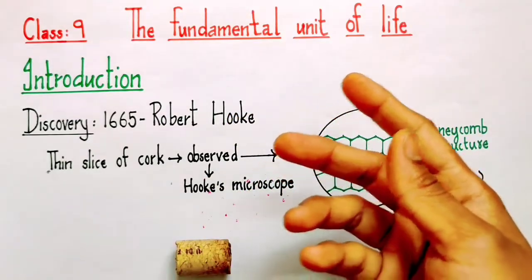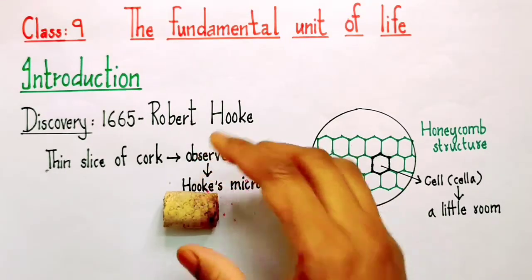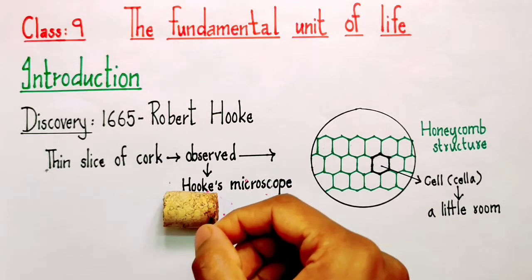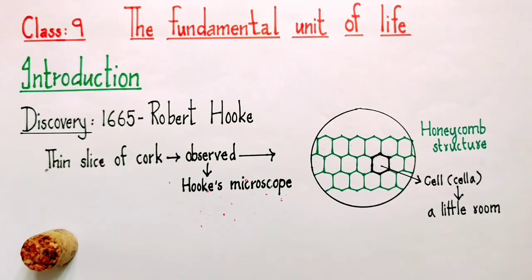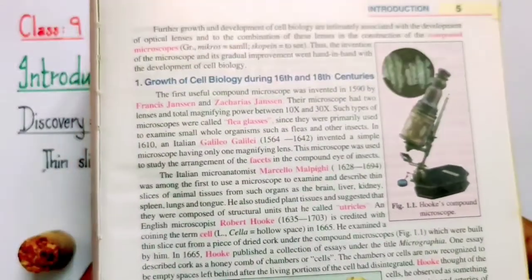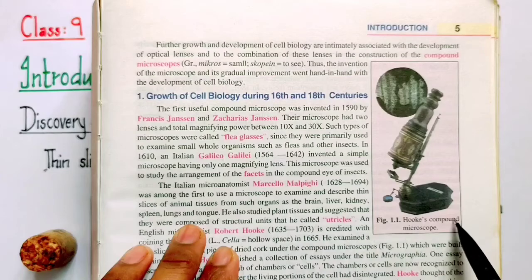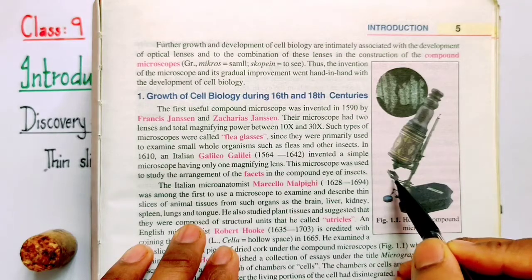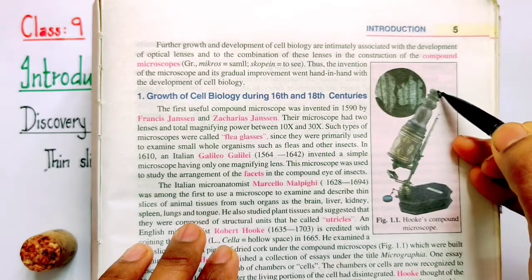So basically what he did was he took a cork like this, and using a blade he made thin sections of that cork. Of those thin sections he picked up one and placed it under his microscope. His microscope looked entirely different from the microscope we use today. This is how Hooke's microscope looked — this is the specimen holder where he placed one of the slices of cork, and this is the eyepiece from where he observed it.